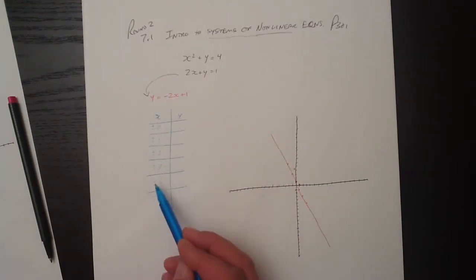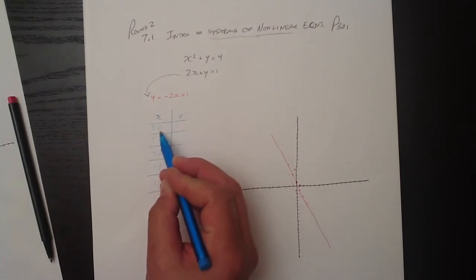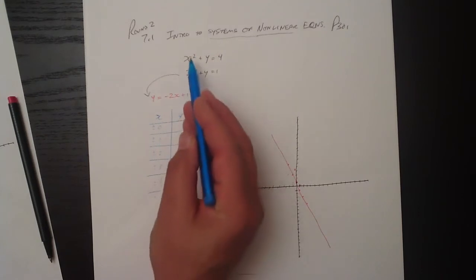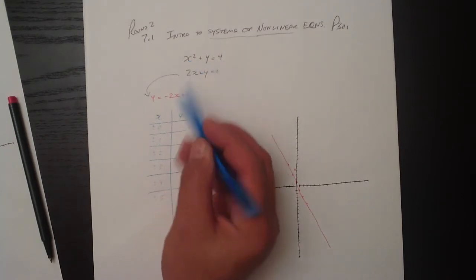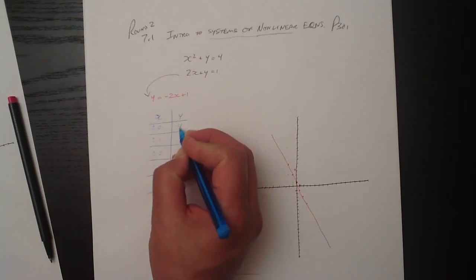But regardless of the x in the coordinate, the y will be the same. So when x equals 0, 0 squared is 0 plus something equals 4. Well, 0 plus 4 equals 4.